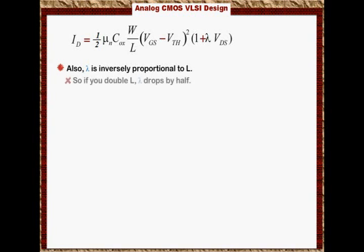So if you double L, lambda drops by half. By increasing L, you increase the capacitance and the device becomes slower. But you can always control lambda by controlling L. The trade-offs are area and speed versus higher gain. We will explore that when we cover amplifiers in subsequent lectures.